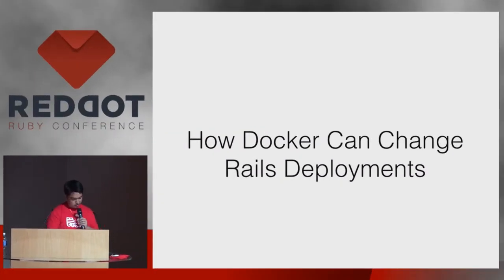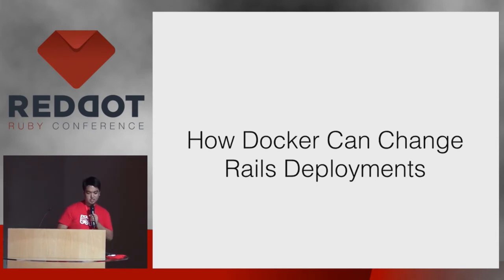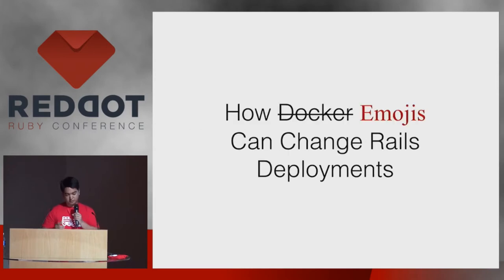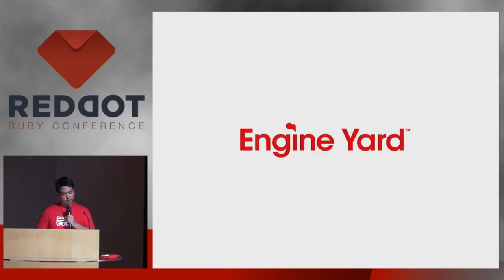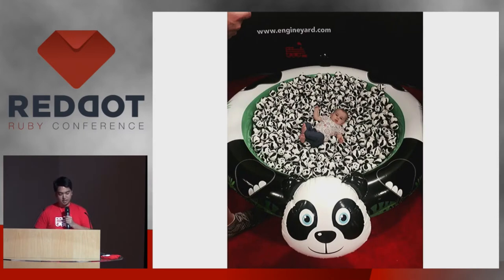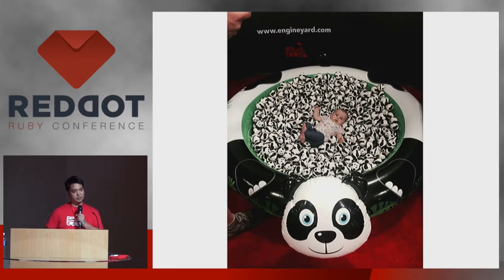Hi. I'm going to talk about how Docker can change Rails deployments, but I wish I could have prepared for how emojis could change Rails deployments — might have been better. My name is Christopher Rieger. I'm on Twitter, and I work for engineering as the support manager for Asia Pacific and Europe. We make panda balls. This was in our booth at RailsConf recently. If you want some panda balls, you can have some later — just approach me.